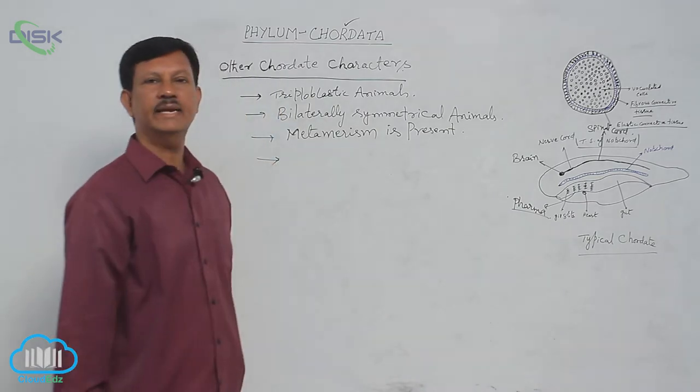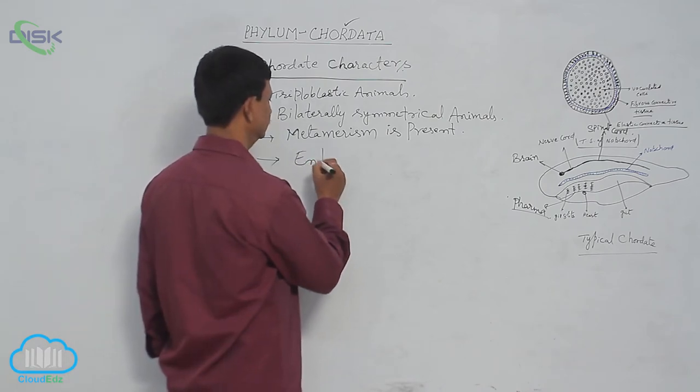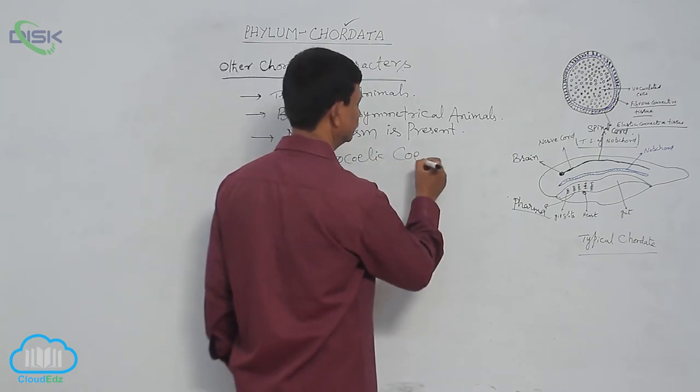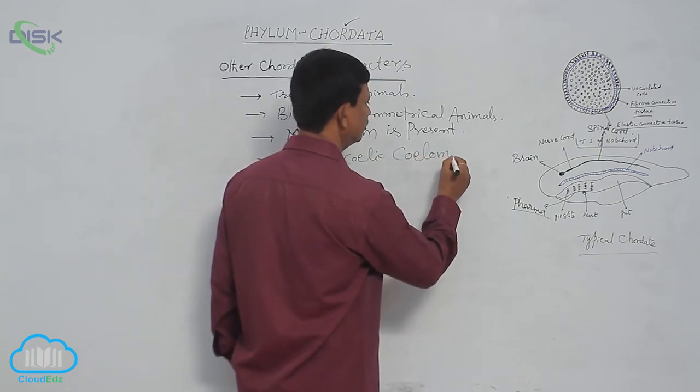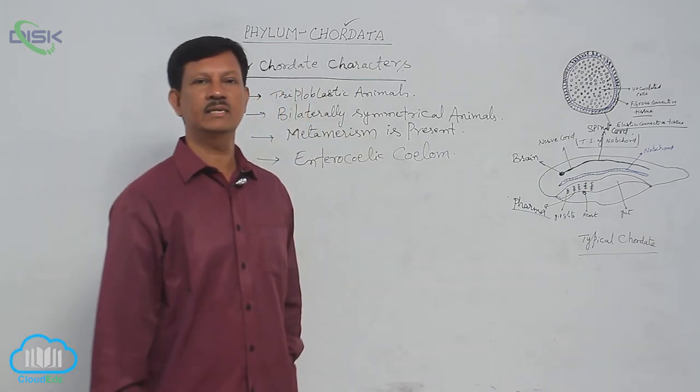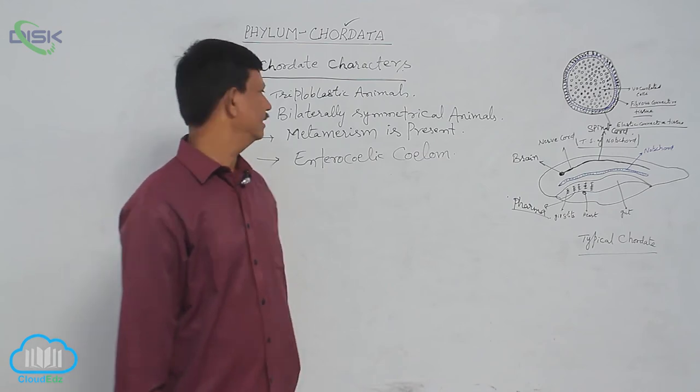The presence of enterocoelic coelom - true coelom is present in the body cavity. The body cavity, known as the true coelom, is situated between the body wall and alimentary canal.